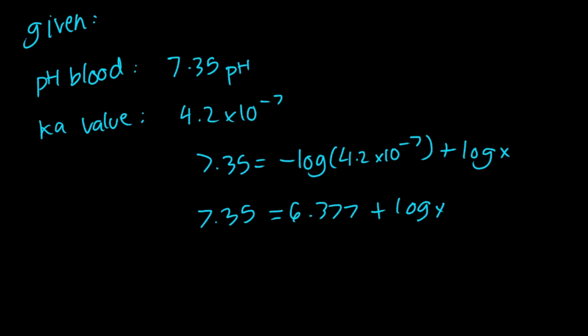Now we're going to substitute 6.377 to the other side to isolate log x. So we get 7.35 minus 6.377 equals log x. Subtracting these two numbers, we get 0.973 equals to log x.